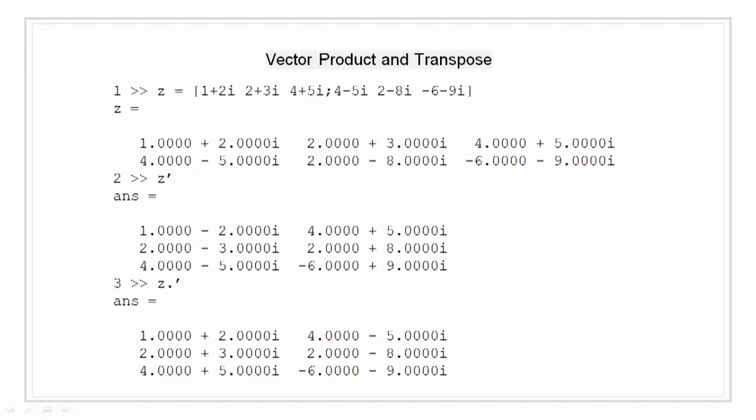Second is complex unconjugated transpose that is denoted by dot transpose. So, in the third line you can see, I have used Z dot transpose that does a transpose but does not change the sign of the imaginary part. So, there is a difference between Z transpose and Z dot transpose that is Z dot transpose does not change the sign of the imaginary part.